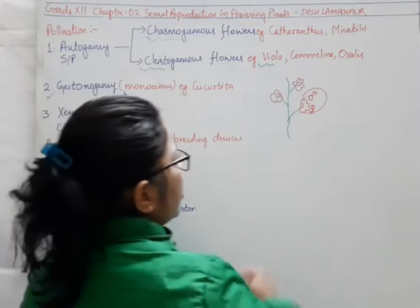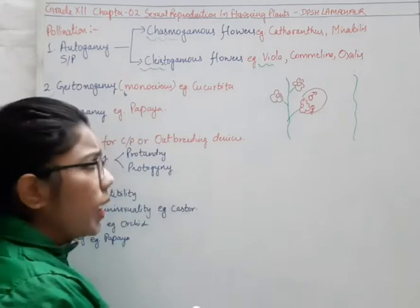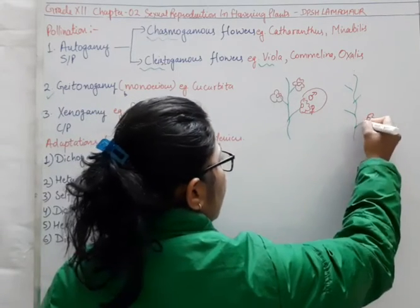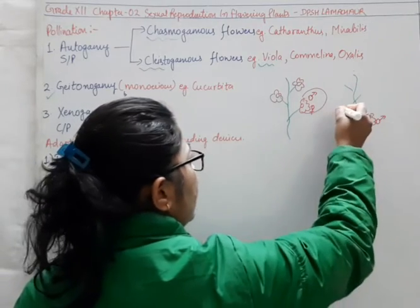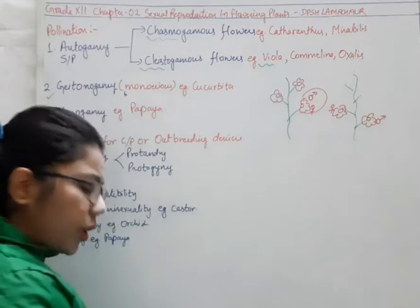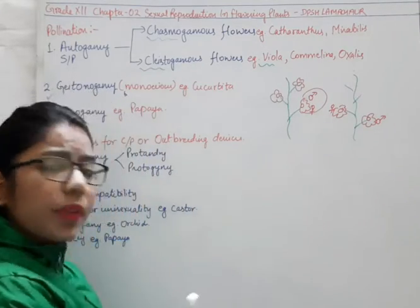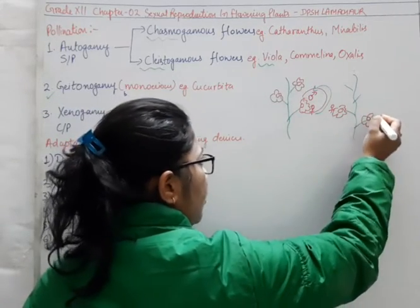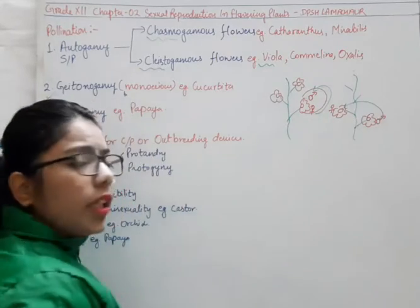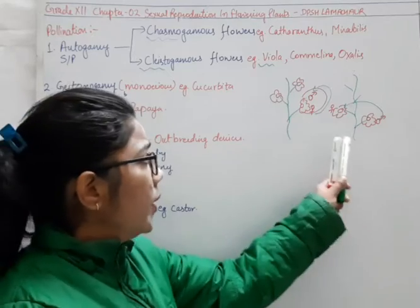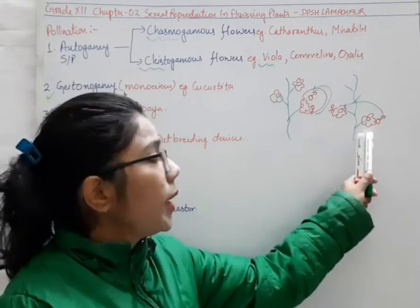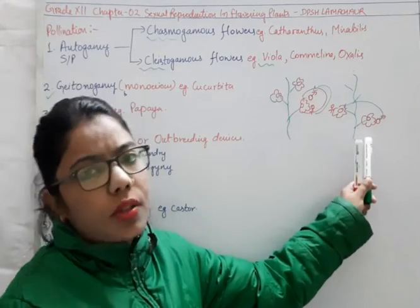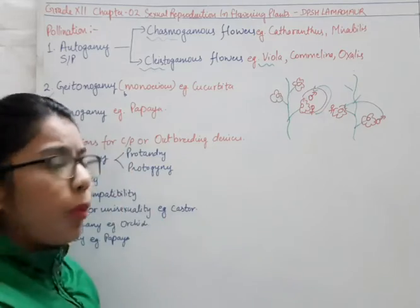If the plant is same and it bears two different types of flower — one flower being male and another one female — then pollen from the male flower will reach the female flower. But what you observe is that the genetic material or genetic constitution will remain the same. So geitonogamy is a type of autogamy — it is a type of self-pollination.